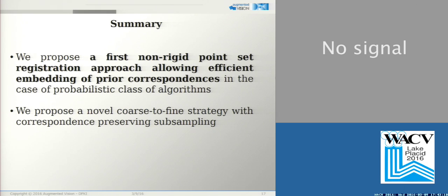To summarize, we propose the first algorithm which allows to efficiently embed correspondence priors into non-rigid registration algorithm, which leads registration in a favorable way. And the second contribution is a novel coarse-to-fine strategy with correspondence-preserving subsampling, which allows us to handle point sets with hundreds of thousands and millions of points. And this strategy also can be applied in combination with other algorithms.